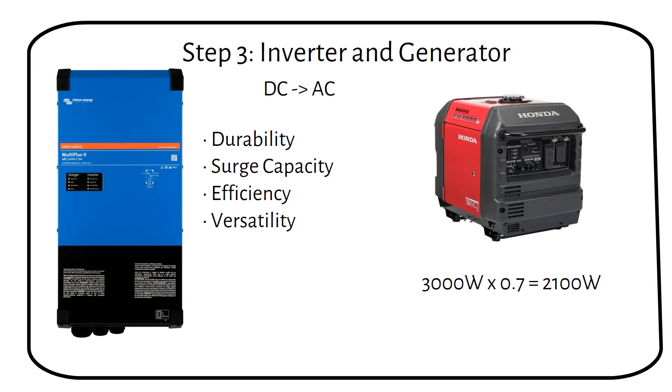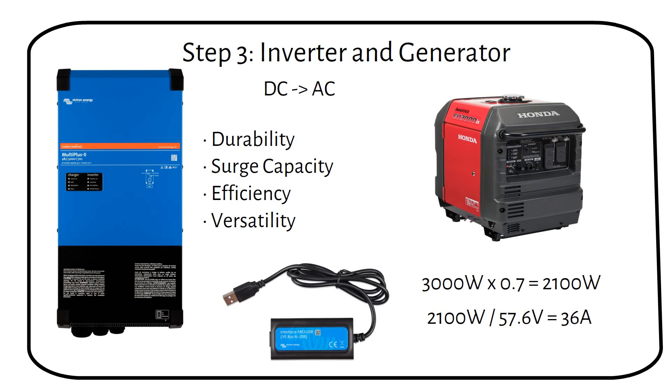To figure out the maximum charging current, we divide the charging power by the charging voltage, and we become 36A. We can adjust the charging current from 70A to 36A in the MultiPlus software, using an MK3 USB dongle. It will take 7 hours to fully recharge a 15kWh battery with the generator. Stay tuned to find out what the system can run.